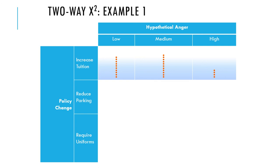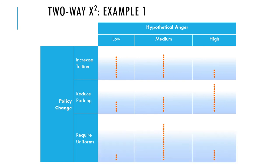For increasing tuition, many students would be kind of angry, but few extremely angry. For reducing parking, not many would have low or medium anger, but a lot would have extreme anger. For requiring uniforms, a whole lot of medium anger but not much low or high anger. We could draw lines across the top of those stacks as if they were bar charts. If the lines are parallel, there is no association between the two variables. If they're very non-parallel, there's a strong association between the variables — they are dependent.